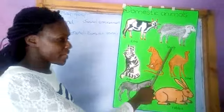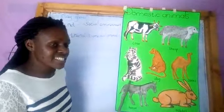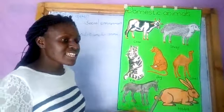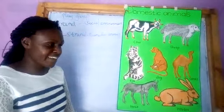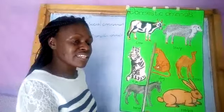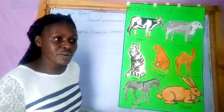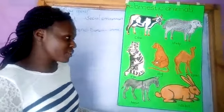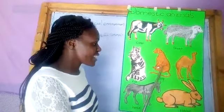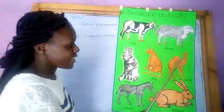A cat provides our house with security. When we have a cat in the house, we cannot see rats running around. A dog also provides our home with security. When we have a dog, strange people cannot get inside our compound. Any time someone new comes in, the dog alerts us by barking.